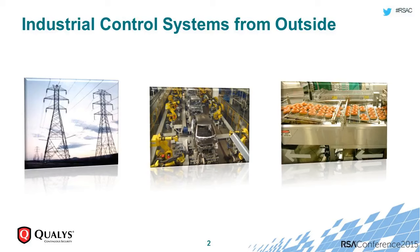So what are industrial control systems? These are systems that are everywhere around us. They could be carrying power to our homes, they could be manufacturing our cars, they could be any small or mid-scale manufacturing plants, or systems that control dams or any type of control systems. Some examples you can see right now on your screen.